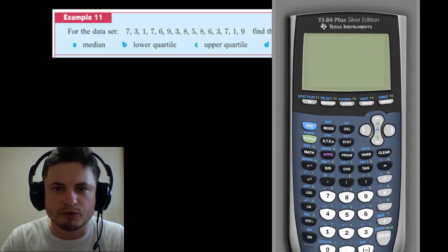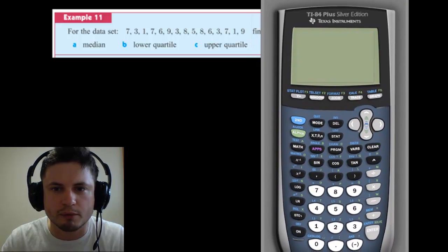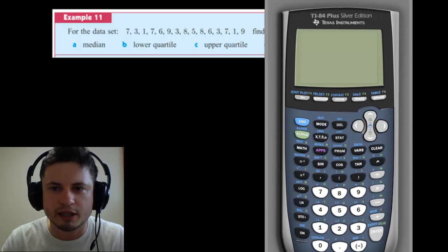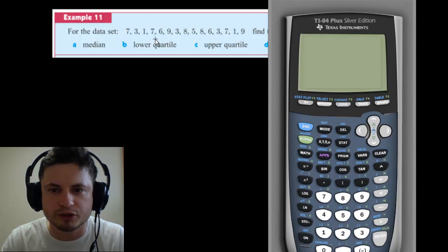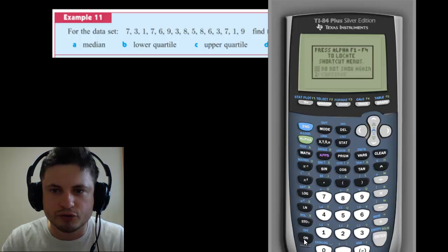Now, we're going to use the example we've used before. This is example 11 from, I believe, page 186 in your book. And we're going to use a GDC to try to construct a whisker plot that you may need to construct on the test.